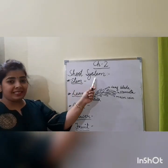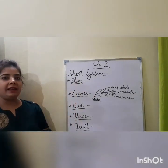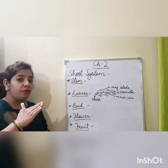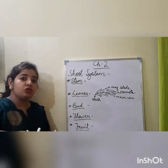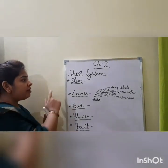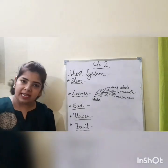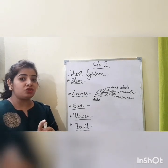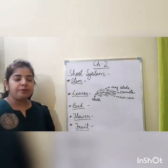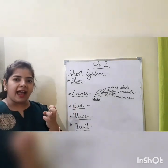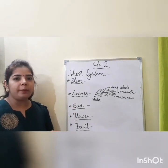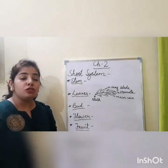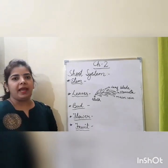Now we are going to discuss the shoot system of a plant. The shoot system has many organs. It is the part of the plant which is above the soil. First of all, we will discuss stem. Stem gives support to the plant, helps it stand straight, and passes water and minerals absorbed by the root to the leaves so that leaves can prepare food.